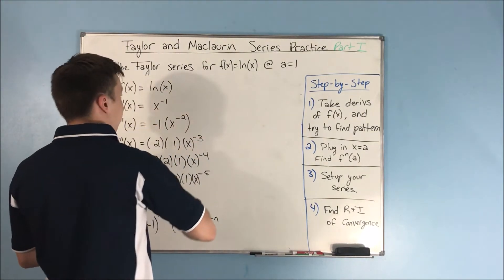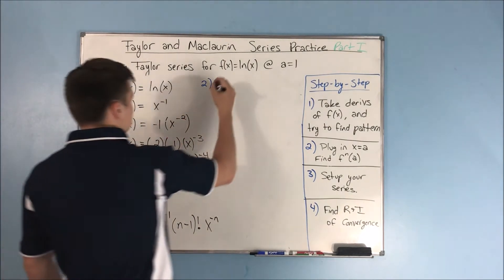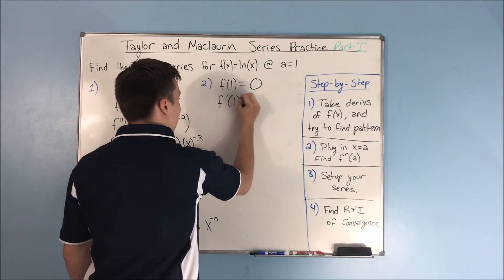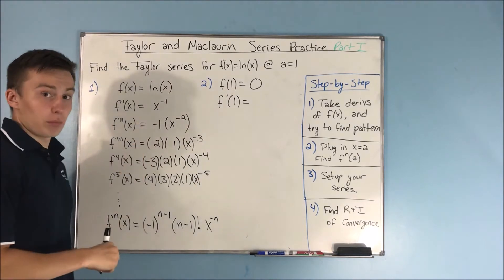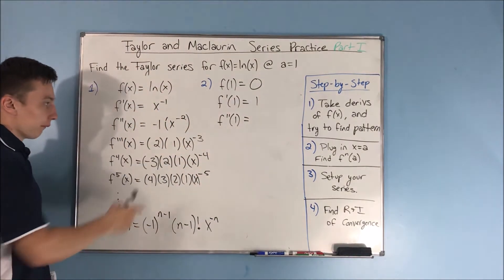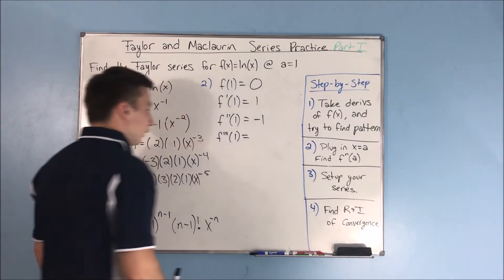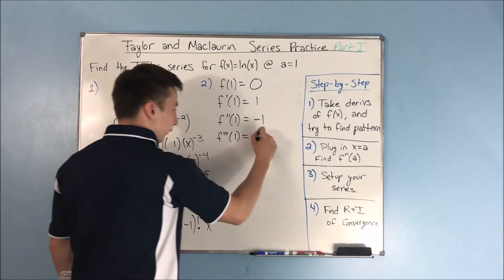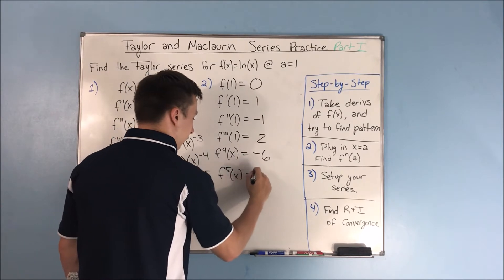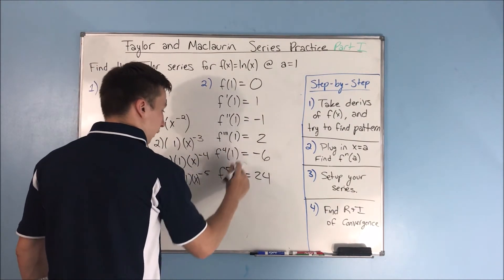Let's move on to step 2. We want to plug in x equals a, and our a is 1. f of 1 is natural log of 1, which is 0. f prime of 1 is just 1, since 1 to any power is 1. f double prime of 1 gives us negative 1. f triple prime of 1 will be 2. The fourth derivative gives us negative 6. The fifth derivative gives us 24.